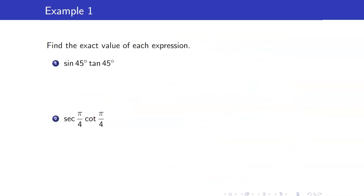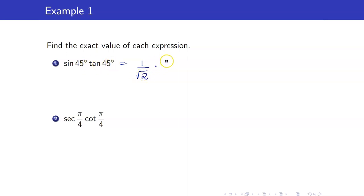For example, let us now evaluate the following expression. Sine of 45 is 1 over square root of 2, and tangent of 45 degrees is equal to 1. So this expression is equal to 1 over square root of 2.